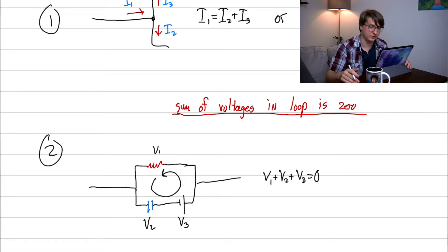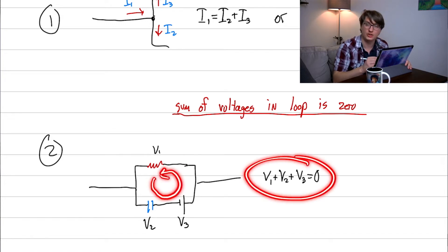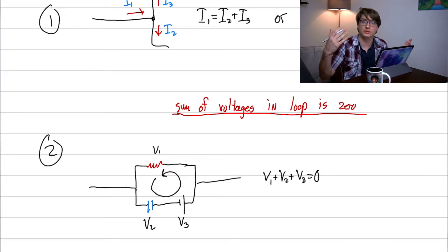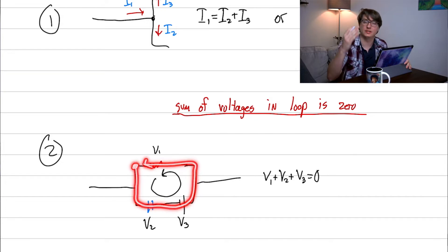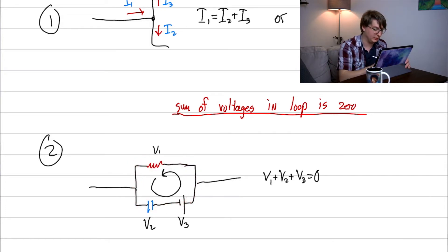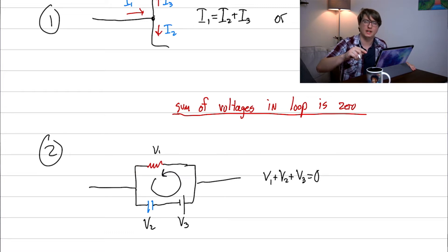The second rule is also a conservation law, but of energy rather than charge. If you go around any loop in a circuit and add up all the voltages, the sum always equals zero. This makes sense because if you start at a point, go around a loop, and come back, you must be at the same energy level — otherwise charges would gain infinite energy going around indefinitely.